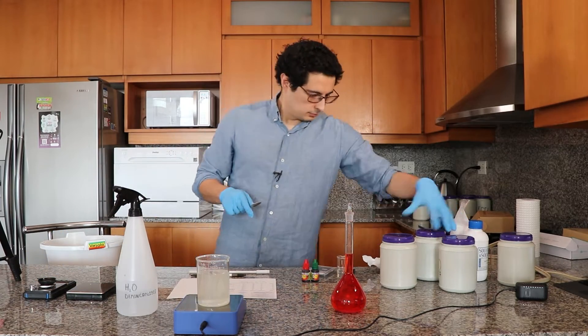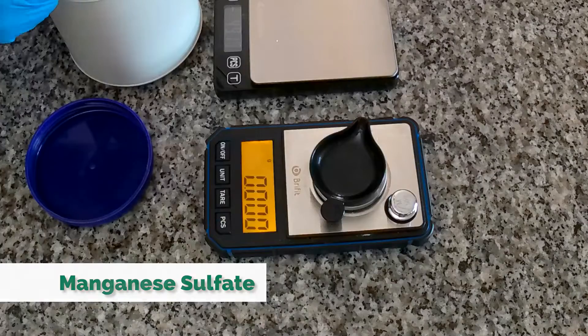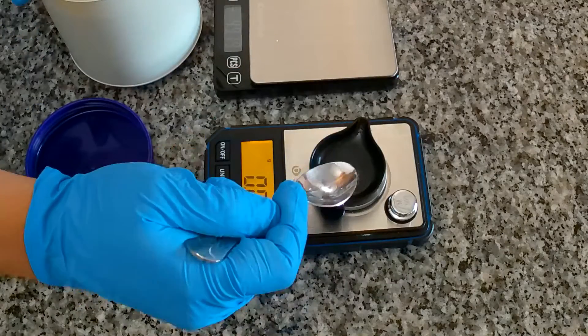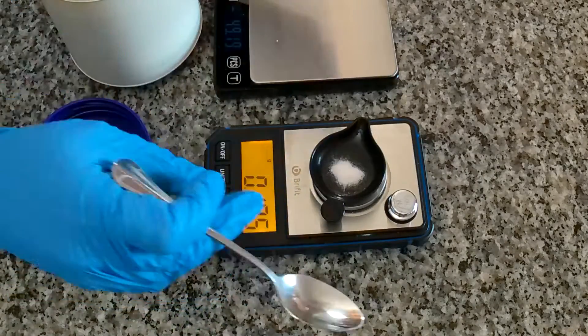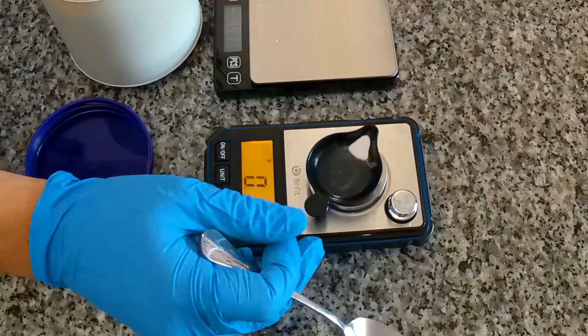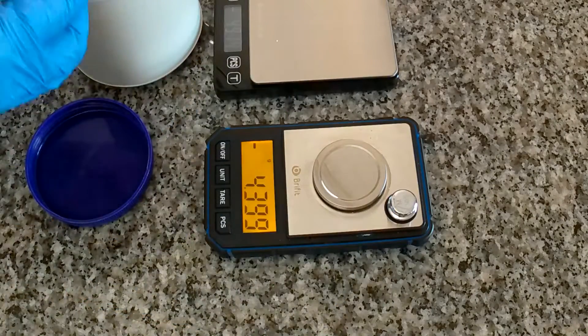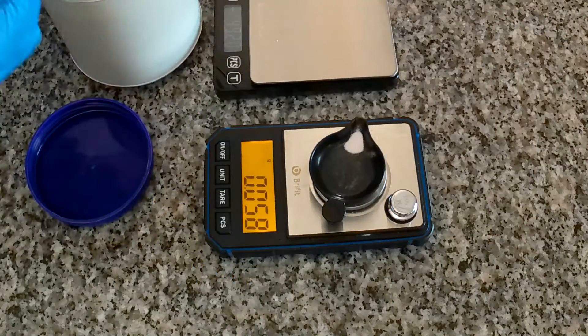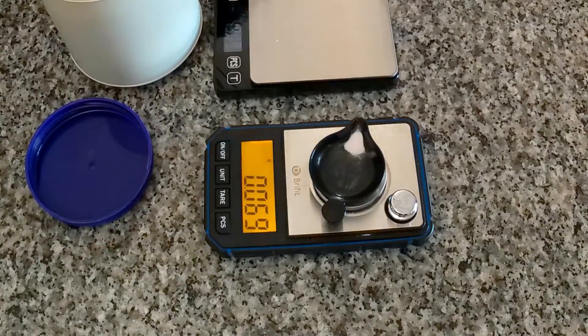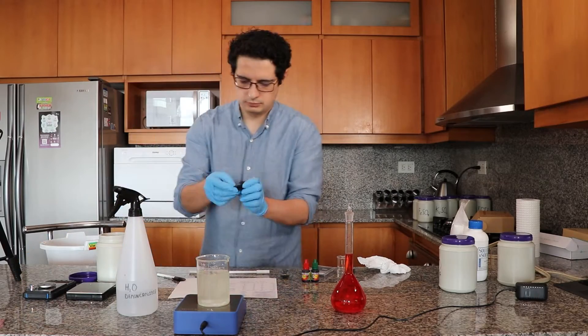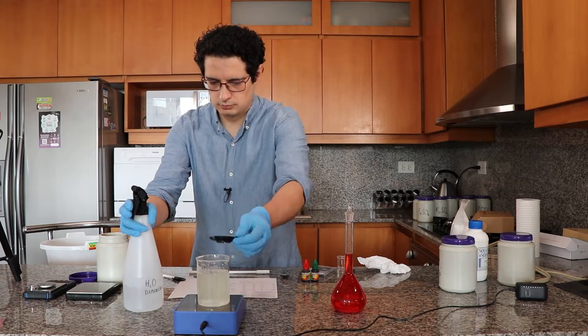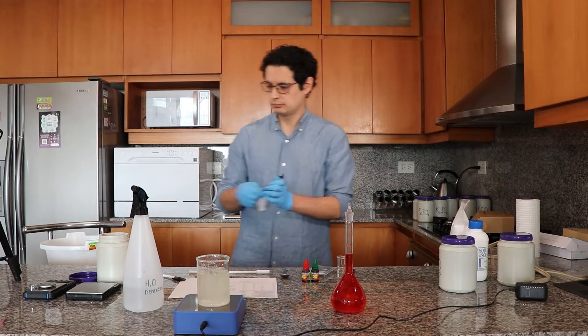Now we continue with manganese sulfate, which is the second most abundant transition metal in the hydroponic solution. And again, transfer it using distilled water to ensure we get everything inside our B solution.